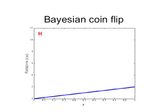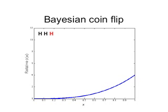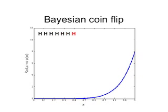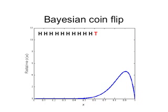If we do one coin flip and it's heads, it's now more likely than not that the coin is weighted toward heads. After two flips, it becomes even more likely — most of the area under the probability distribution is toward the right side. We can continue for successive flips — that's 10 flips in a row. But if we get a tails, it's impossible for x to equal exactly 1, otherwise we would never get a tails. So the most likely scenario is that the weighting is about 0.9.